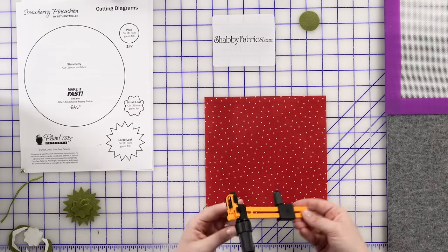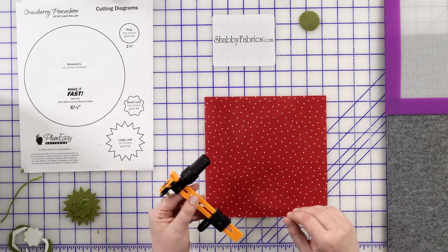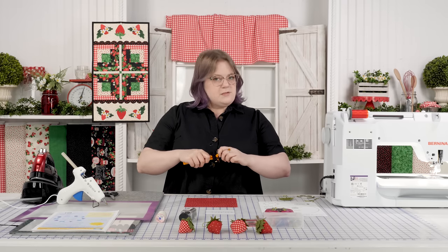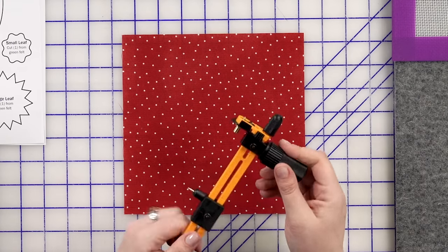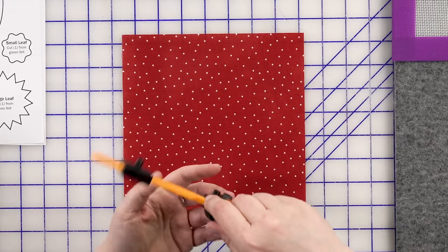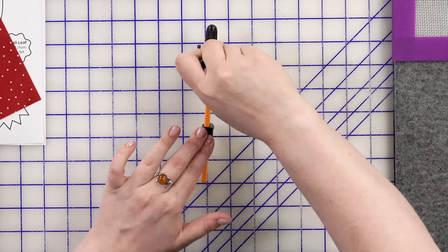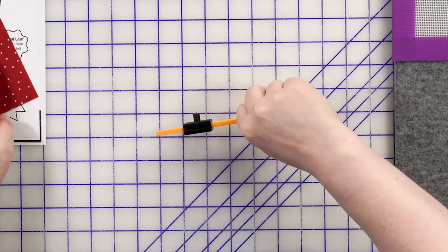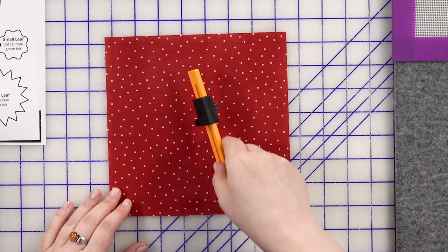I love the rotary circle cutter from Olfa. This does a variety of sizes of circles and it's super easy to use. It can be a little confusing at first. What this is is a blade, a pivot point, and then this actually ratchets around that pivot point. It's good to kind of test this out. You put it down with that pivot point down and just go in a circle. So might test this out on a couple pieces of scrap fabric first.